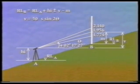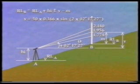And in this case, substituting for S and theta gives V equals 50 times 0.366 times sine 2 times 2 degrees 17 minutes 27 seconds, which equals 1.462 meters.